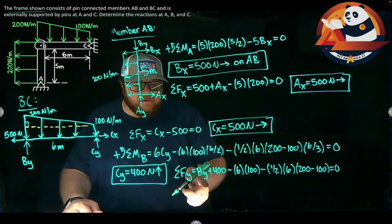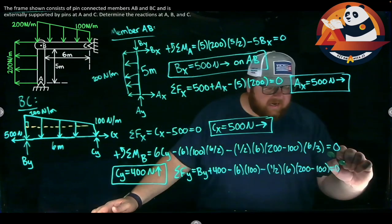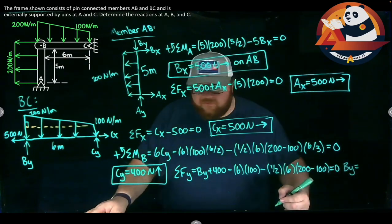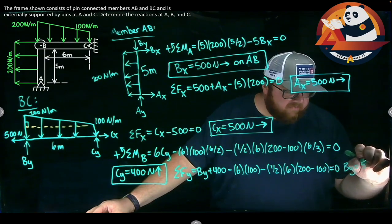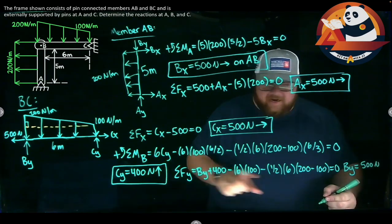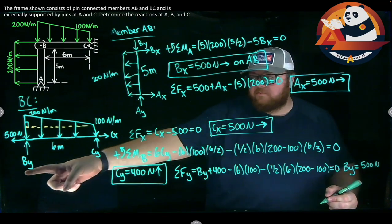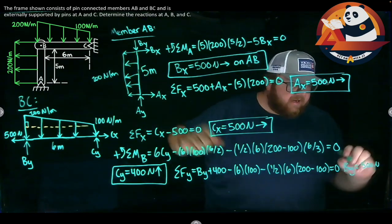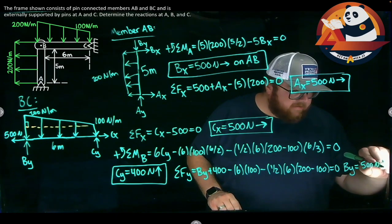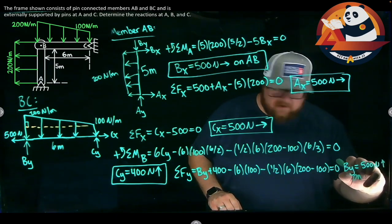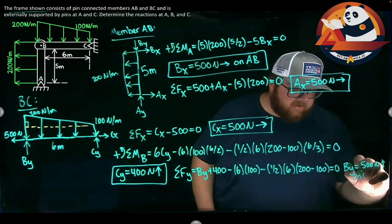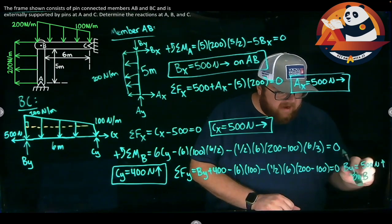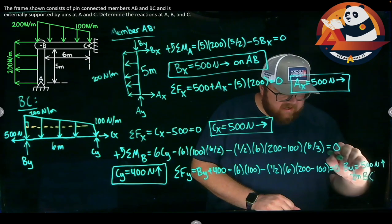But I can solve this for BY. It's my only unknown here. I will get BY is equal to 500 newtons. 500 newtons. I get a positive number out from this equation, which means I guessed the right direction here. And also, I guessed the right direction on AB. It's going up on member BC. On BC.